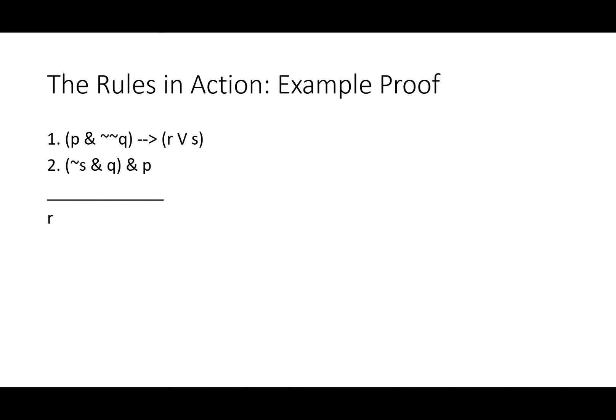So let's see these rules in action. Let's take a look at an example proof, kind of an ugly looking one, but it will use quite a few rules of inference and rules of replacement. So premise one: if P and not not Q, then either R or S. Premise two: not S and Q and P. Therefore, R.